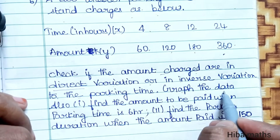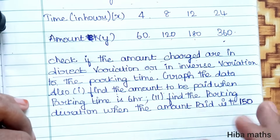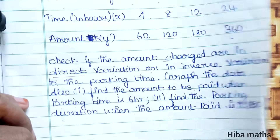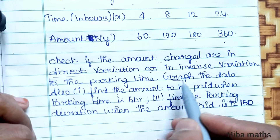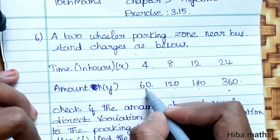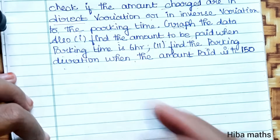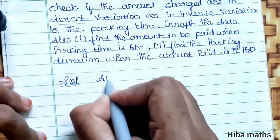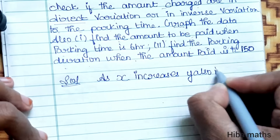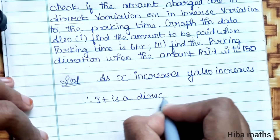Check if the amount charged is in direct variation or inverse variation to the parking time, and graph the data. Also find the amount to be paid when parking time is 6 hours, and find the parking duration when the amount paid is 150 rupees. Since time increases and amount increases, this is direct variation.